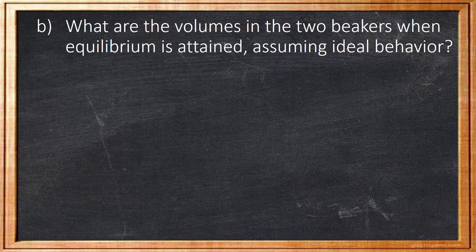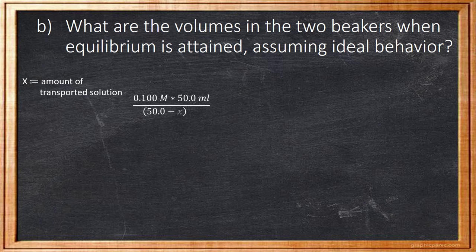In the second task, we want to know how much the volume will change in each beaker. Let x be the amount of transported water between the two beakers. Then we will get the following calculation: 0.10 times 50 divided by 50 minus x equals 0.12 times 50 divided by 50 plus x.